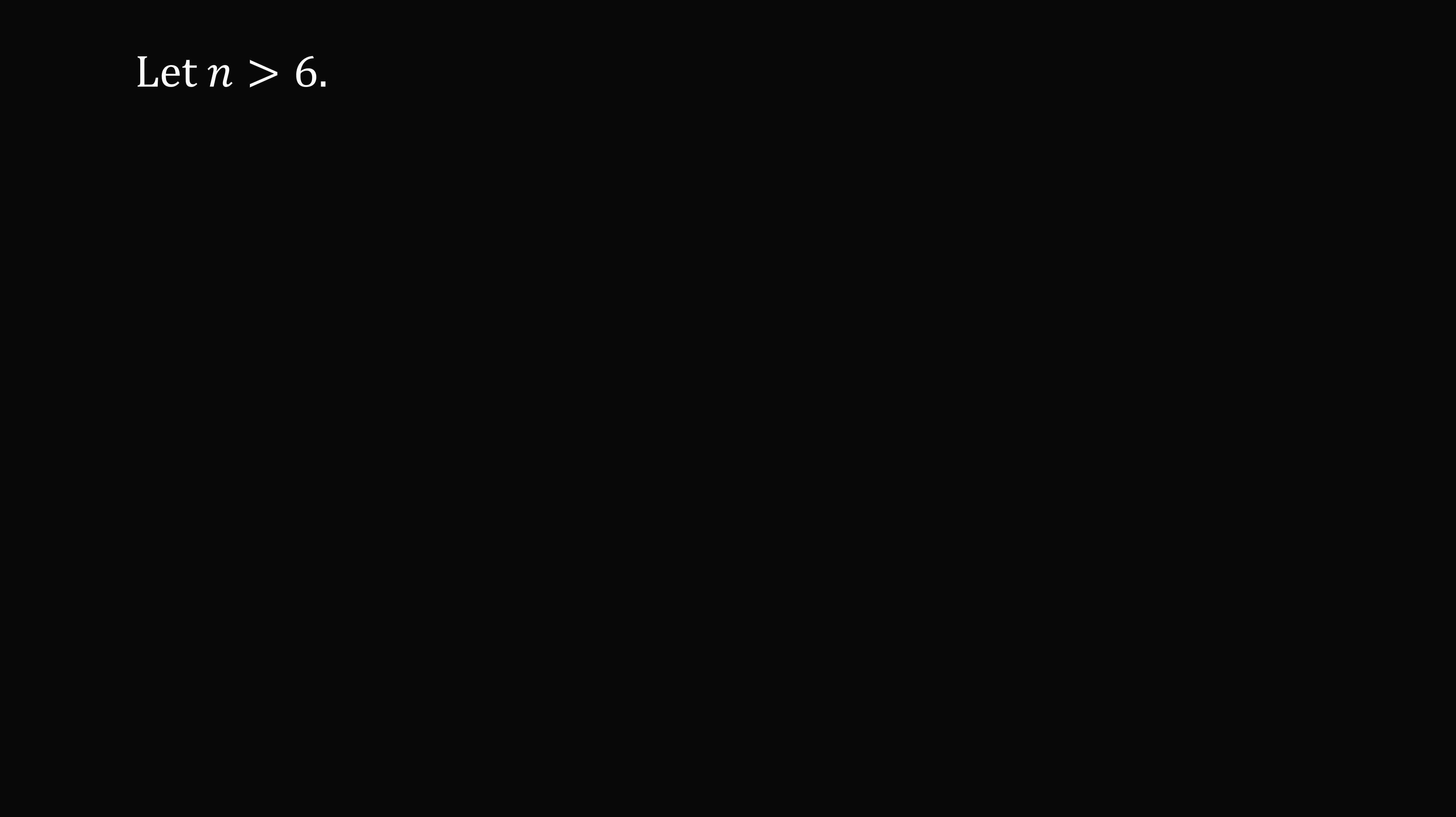So if n is greater than 6, we can imagine that the best strategy is to choose as many 3s as possible, and then we might need a couple of 2s. So how can we prove this?